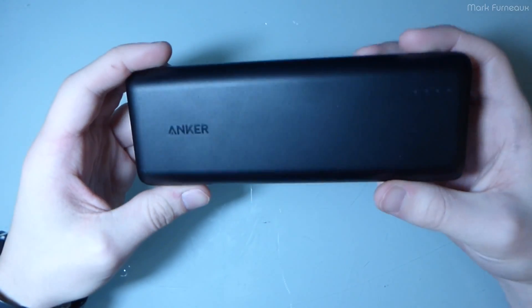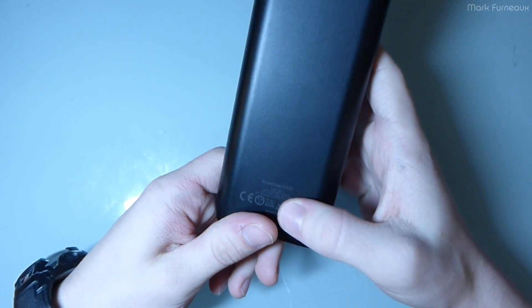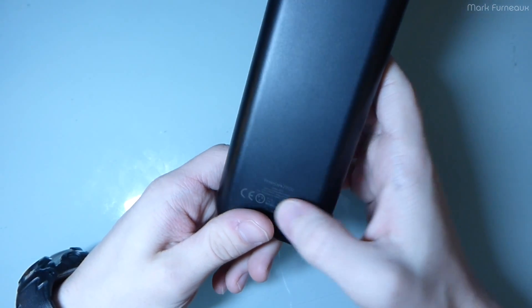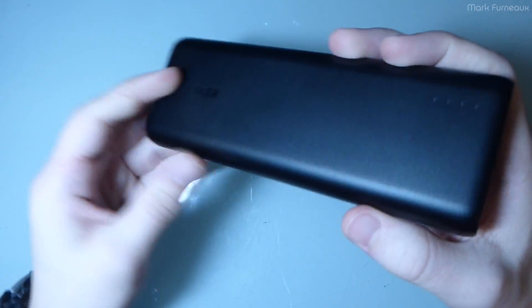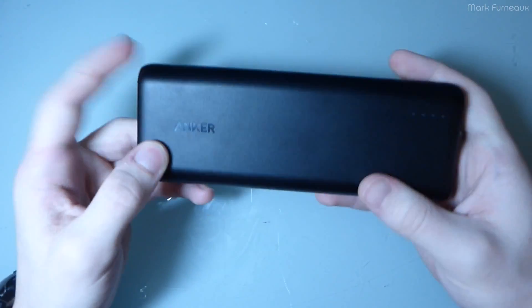Howdy folks. So today I have an Anker power bank. This is the PowerCore 20100. It's kind of an odd name, but they use that to symbolize that it's 20,100 milliamp hours. They should just say 20.1 amp hours, but of course that's a bigger number and marketing likes that.